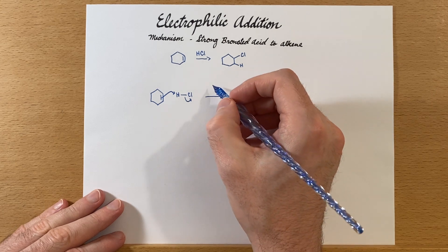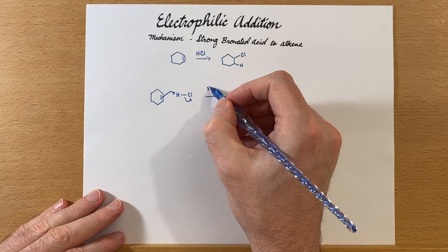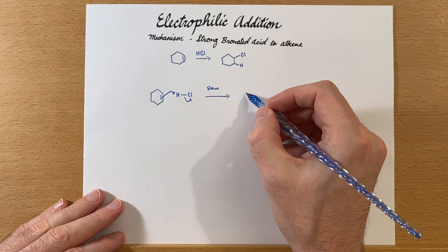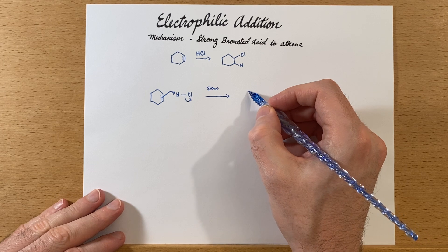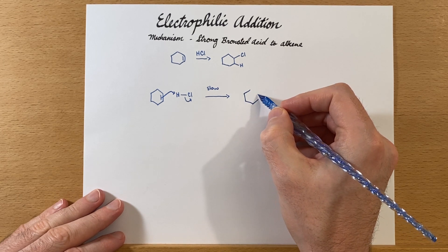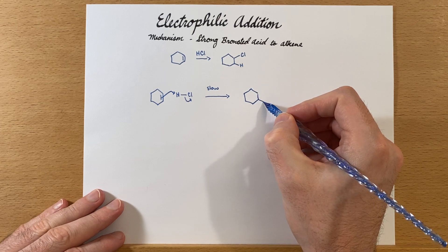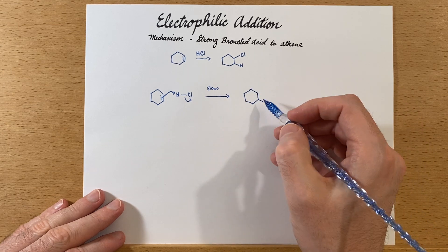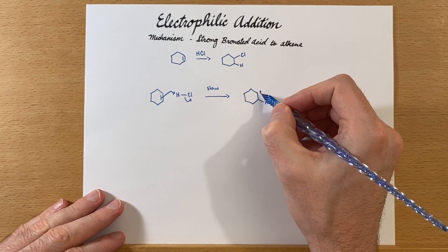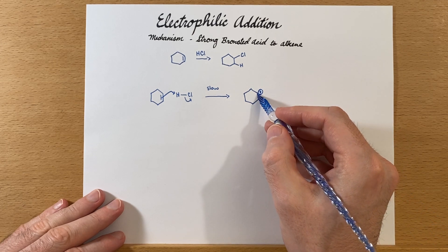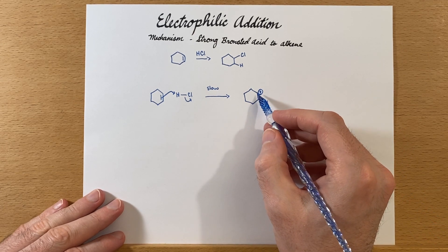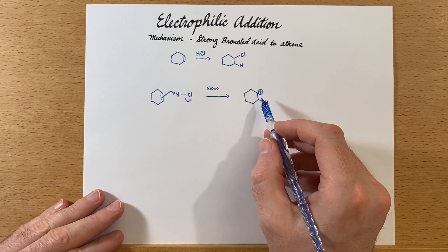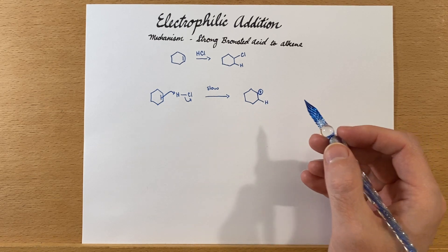This first step — the electrophilic addition — is the slow step, because we're making a high-energy intermediate. Looking at the intermediate: we've added our proton to one carbon (it's a symmetrical molecule, so we just pick one). You'll notice we now have a carbocation — a secondary carbocation, but still a higher-energy situation because we have a charged species.